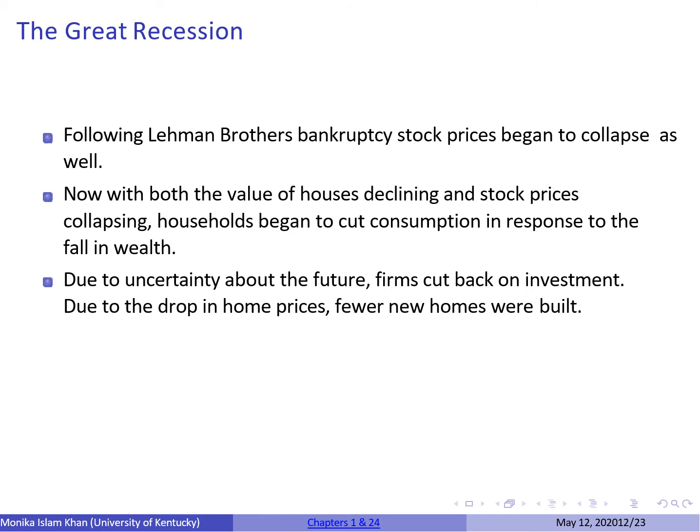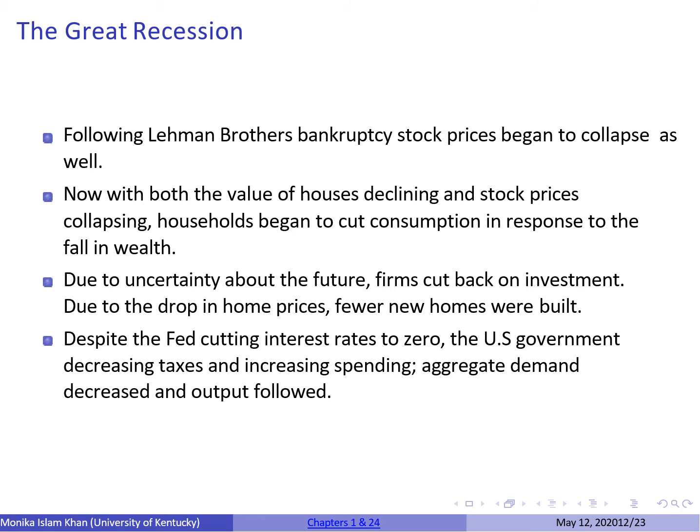Houses and stocks are part of a person's wealth. As housing prices and stock prices kept falling, individuals began cutting consumption in response to a fall in wealth. Given the uncertainty, firms also began cutting down on investment. Under these circumstances, aggregate demand can be increased by cutting interest rates, decreasing taxes, and increasing government spending. The Fed and the government did all of that — the Fed even lowered interest rates to zero — but nothing worked; aggregate demand fell.